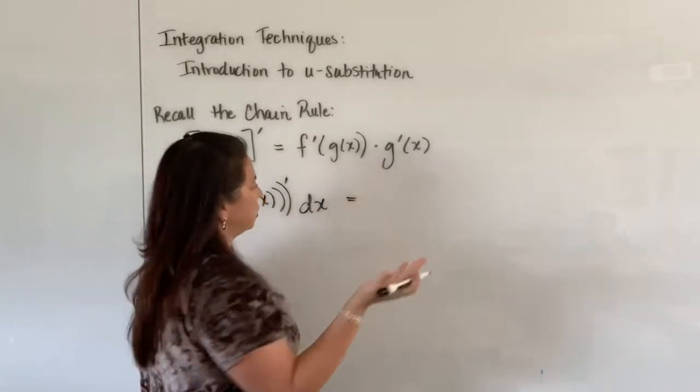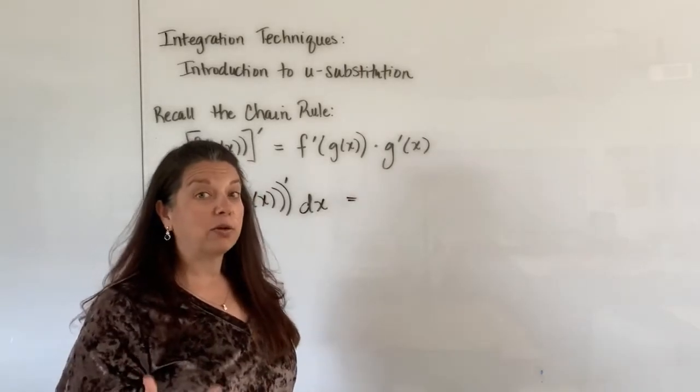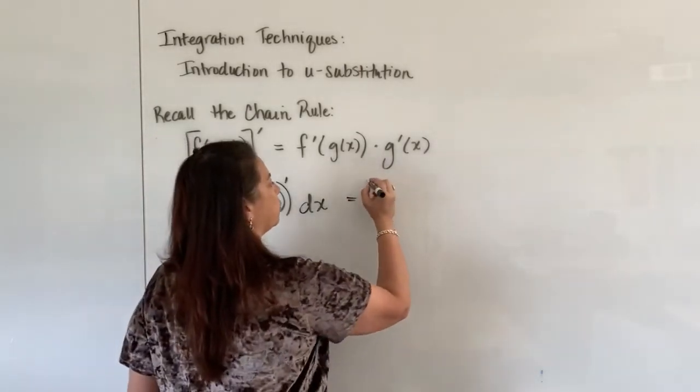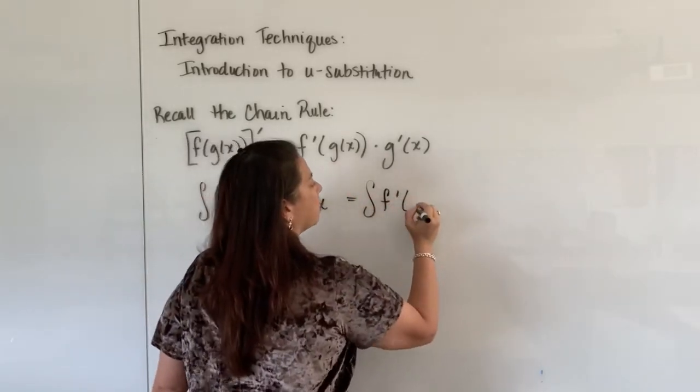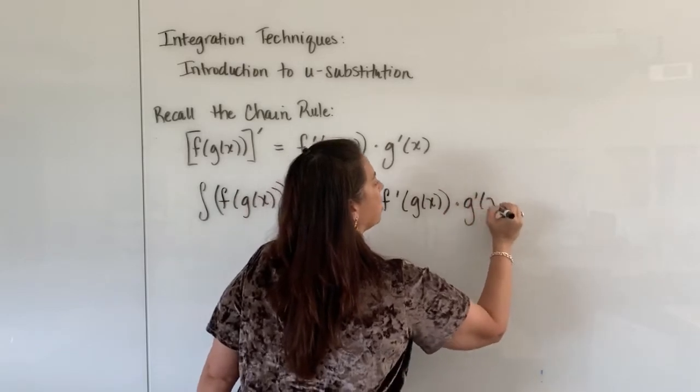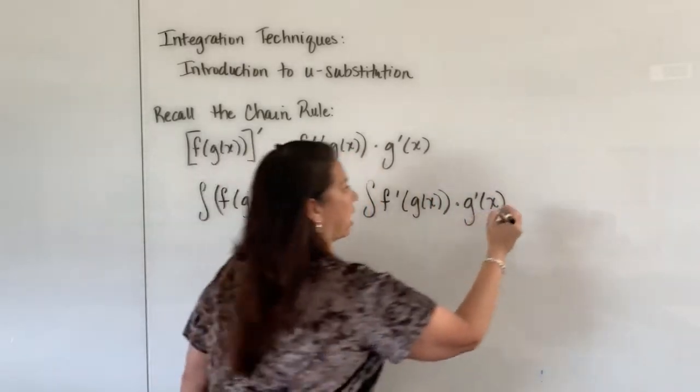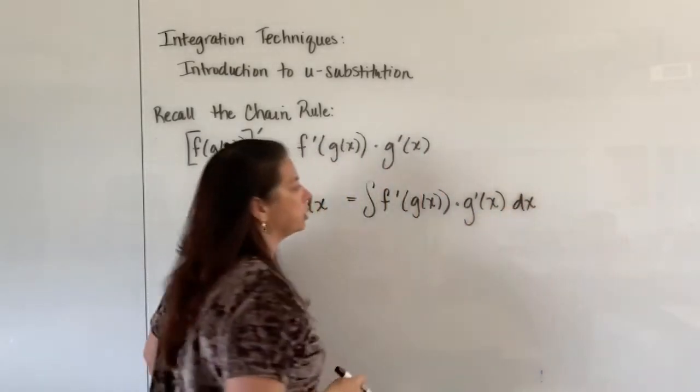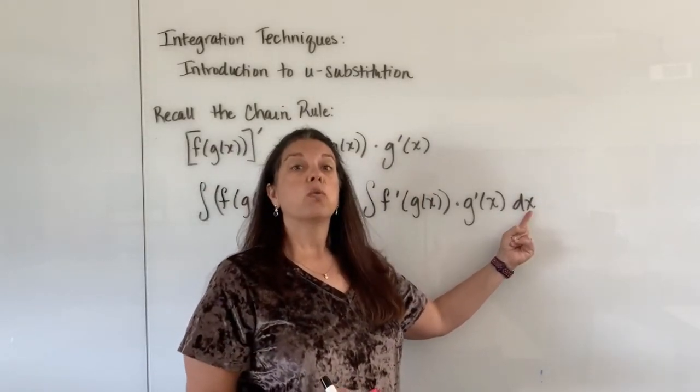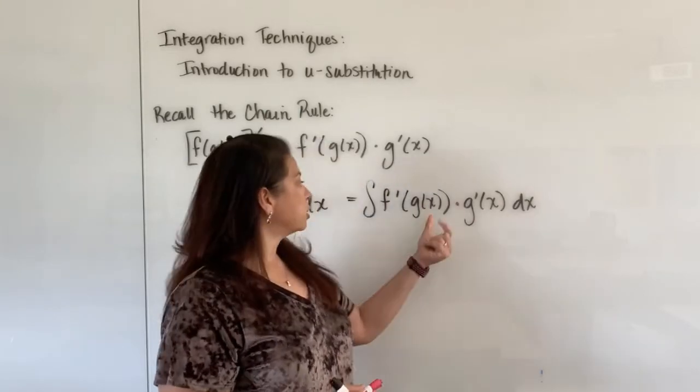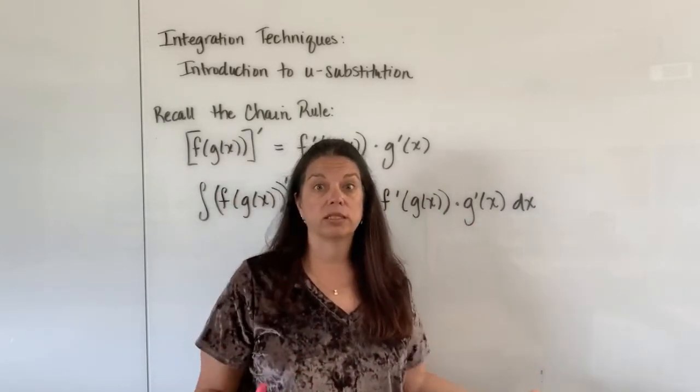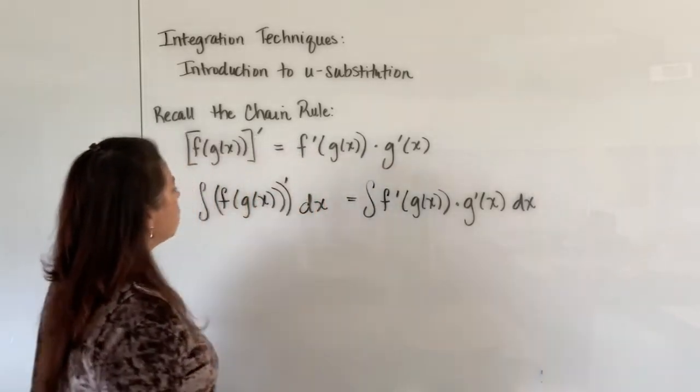And just like always, whatever I do to one side of the equation, I should also do to the other side of the equation. So we are going to find the integral of this f prime of g of x multiplied by g prime of x and also still having the dx notation. Again, this reminds us of what you're taking the integral with respect to. And since we have inputs here of x's, we're going to be talking about integrating relative to x.